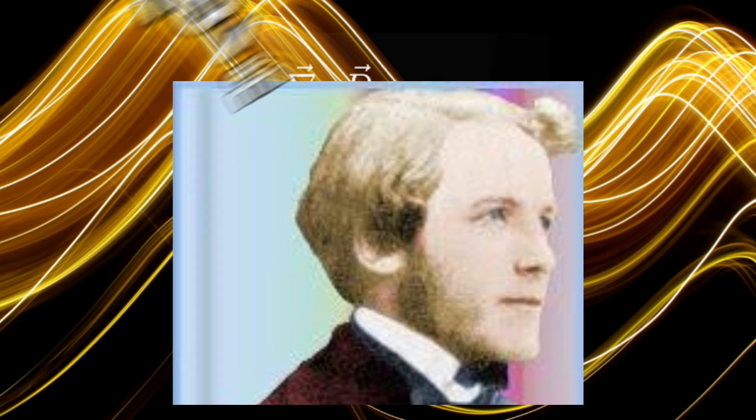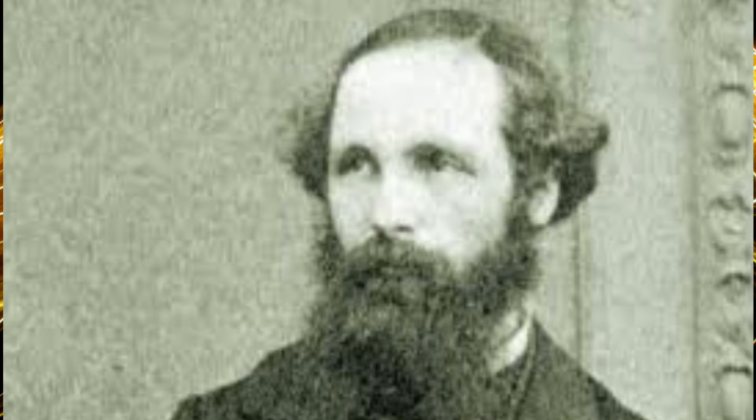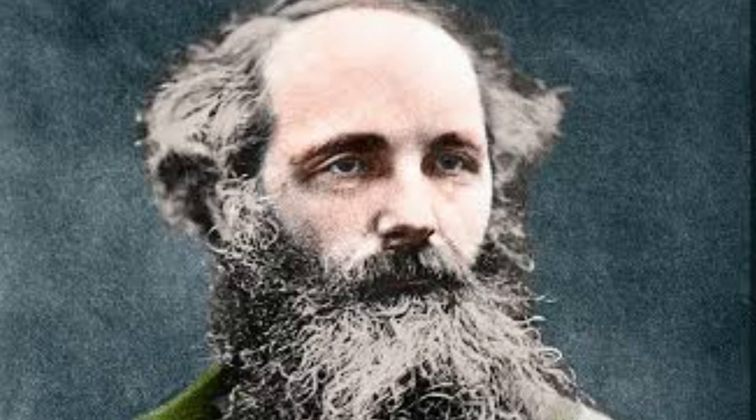10. Death and Legacy. James Clerk Maxwell passed away on November 5, 1879, at the age of 48 due to abdominal cancer. Despite his relatively short life, his contributions to science continue to influence the world. His equations laid the foundation for modern physics and technology, leading to breakthroughs in fields such as telecommunications, electronics, and particle physics.